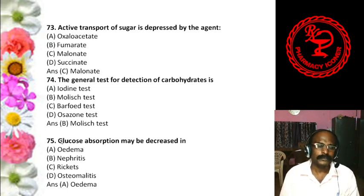Question 61: Alpha glycosidic bond is present in — Lactose, Maltose, Sucrose, or All of the above. The answer is B, maltose — alpha glycosidic bond is present in maltose. Question 62: Branching occurs in glycogen approximately after every — 5, 10, 15, or 20 glucose units. The answer is 10 glucose units.